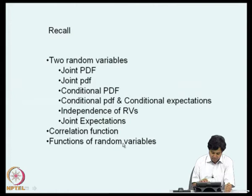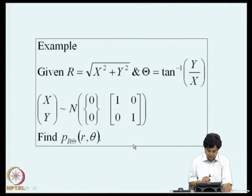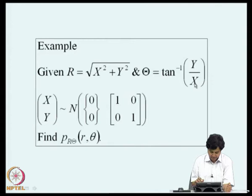We also discussed the problem of functions of random variables. Given two random variables and their joint probability density function, if we introduce two more random variables as functions of the original two, how do we obtain the joint probability density function? We will continue with that. We now consider an example where x and y are jointly normal, uncorrelated (and therefore independent), with zero mean and unit standard deviation. We introduce the transformation: r is the square root of x squared plus y squared, and theta is tan inverse of y by x. The problem is to find the joint probability density function of r and theta.